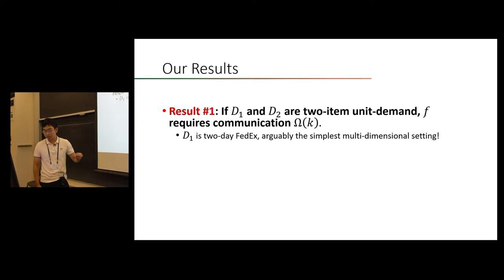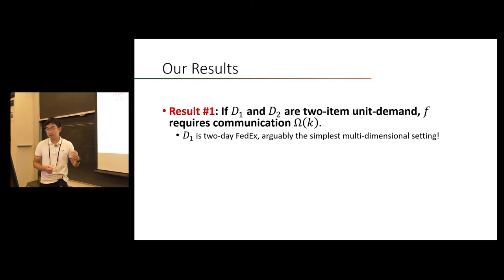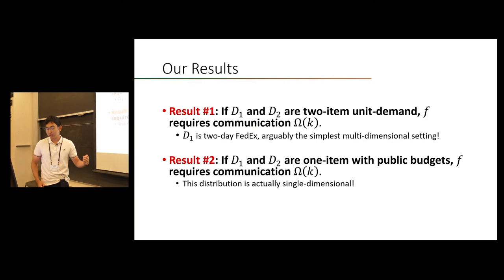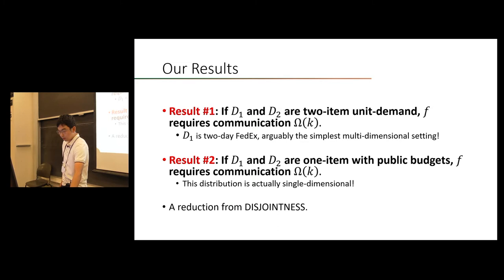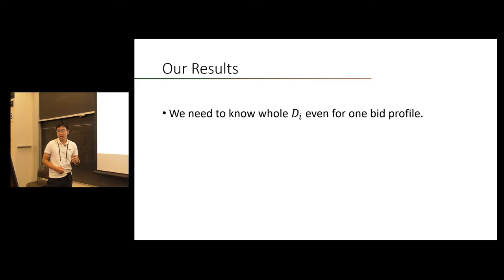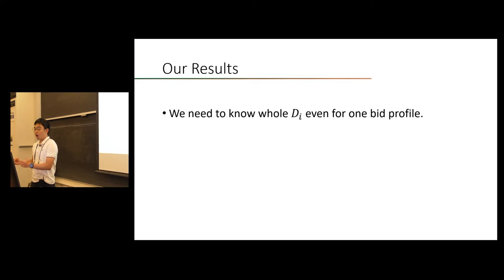Let's see why this communication protocol and complexity exactly captures the fact that the single-dimensional auction is local. If D1 and D2 are single-dimensional, then the Myerson auction can be solved in O(log K) communication bits — Alice or Bob can just compute their virtual value on their own and send it in O(log K) bits. The other bidder can then compare the two virtual values and determine the winner. Our first result is that if D1 and D2 are one-item auctions with an additional public budget constraint, then it requires communication Omega(K). Note that this distribution is just a two-dimensional auction.